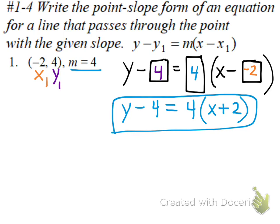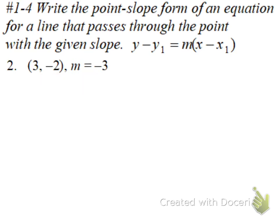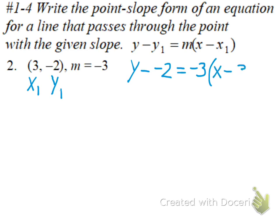And that's all we have to do for point-slope form. Same directions here — we'll label our points x-sub-1, y-sub-1, and substitute into the formula. The minus is already there. Y-sub-1 is negative 2, m is negative 3, x minus is already there, x-sub-1 is 3. Minus a negative, rewrite as plus a positive.